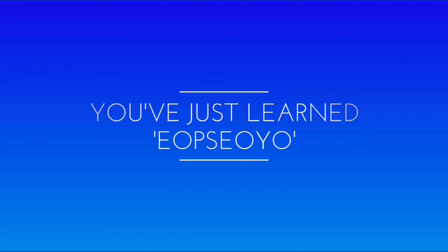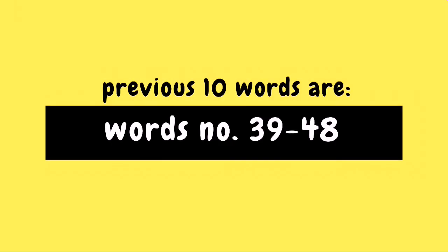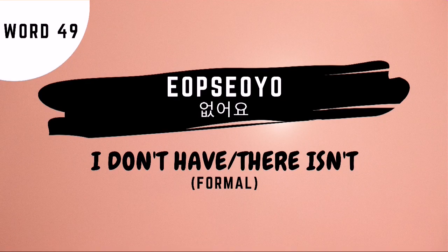And with that, you've just learned opsoyo. Let's proceed to the previous ten words recap. As of now, the previous ten words are words number 39 to 48. But don't forget, our word for today is word number 49, opsoyo, which is used to say that I don't have something or there isn't something.